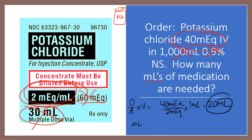For dimensional analysis, we're solving for mL. We have 1 mL containing 2 mEq, and we need to give 40 mEq. Cancel the mEq units, then multiply: you have 40 over 2. Dividing gives 20 mL. Part of the challenge with medication calculations is knowing which information to use from everything given to you.